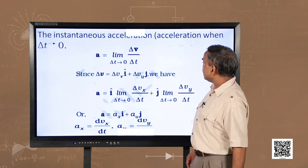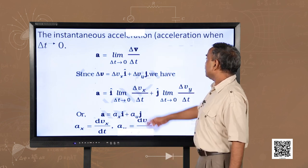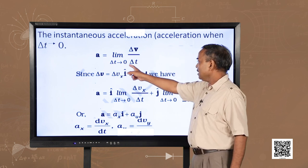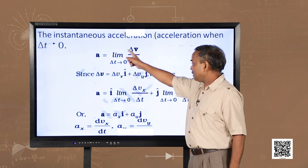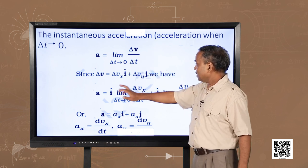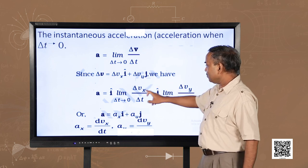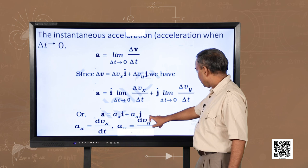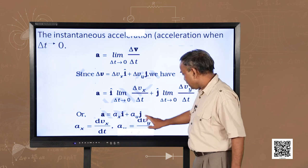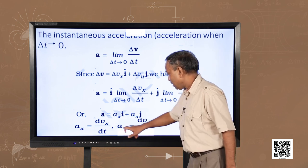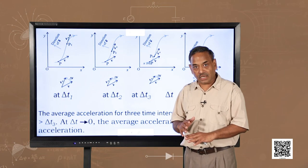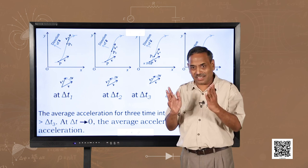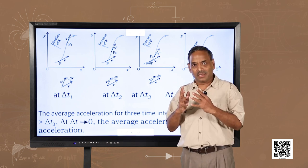Now let us see the instantaneous acceleration. The acceleration a is nothing but the limit as delta t tends to zero of delta v by delta t — there is no need to explain this further, we have explained it several times. Now let us see it graphically, friends. It is really very interesting — it is a beauty of science, a beauty of graphs.